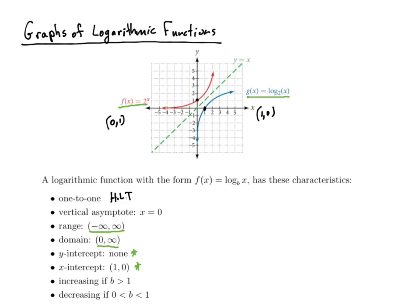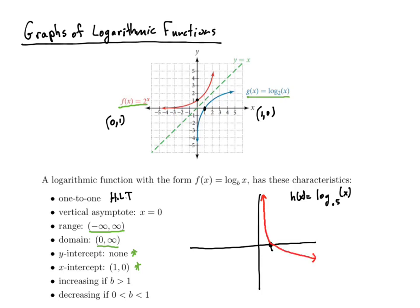The b-value, which is just the base — here the base is 2 in the graphed function. If the base is greater than 1, the function is increasing. If the base is between 0 and 1, the function would be decreasing. For example, if I had h of x equal to log base 0.5 of x, that's still going to go through the point (1, 0), but the graph still has a vertical asymptote at the y-axis and is decreasing.